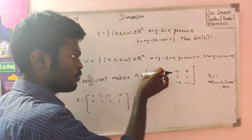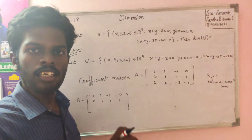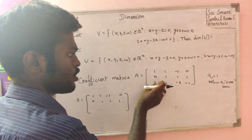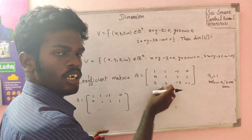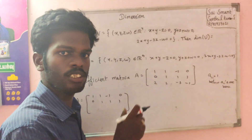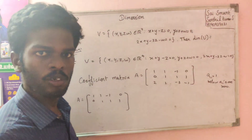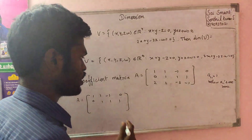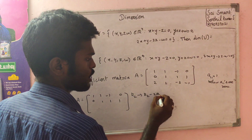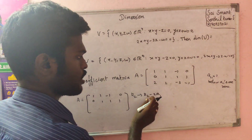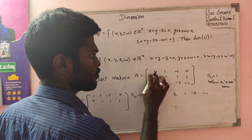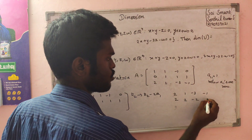What is the element of A11? R1 is the same. You can write the element of A11 to 0. If you write A22 to 0, you can write the element of A22. If you write A33 to 0, you can write the element of A33. Now R2 tends to R2 minus 2R1. 2 times R1 gives 2, 2, 2, 0.